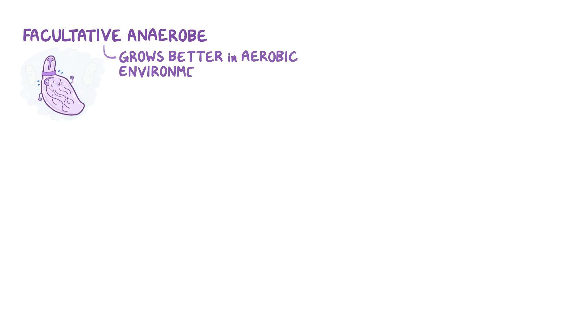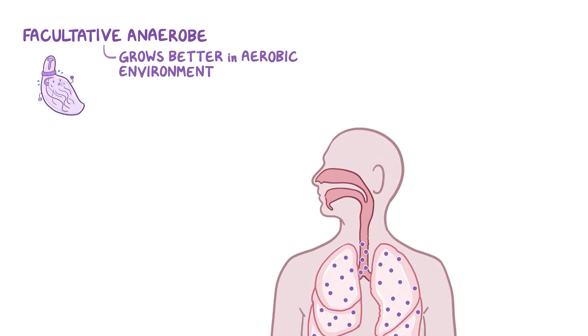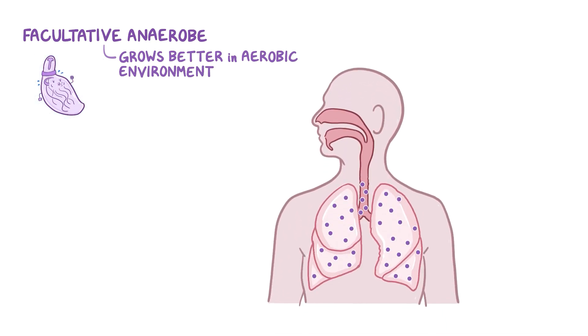Mycoplasma pneumoniae is a facultative anaerobe, meaning that it can live without oxygen if it has to, but it grows better in an aerobic environment, so it prefers places like lungs or respiratory airways where there's an unlimited flow of oxygen.